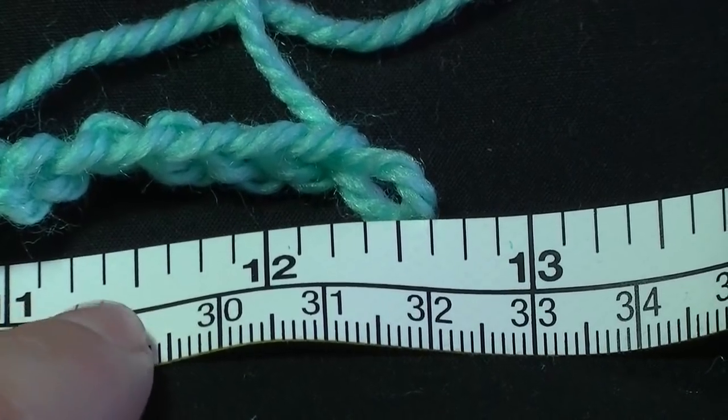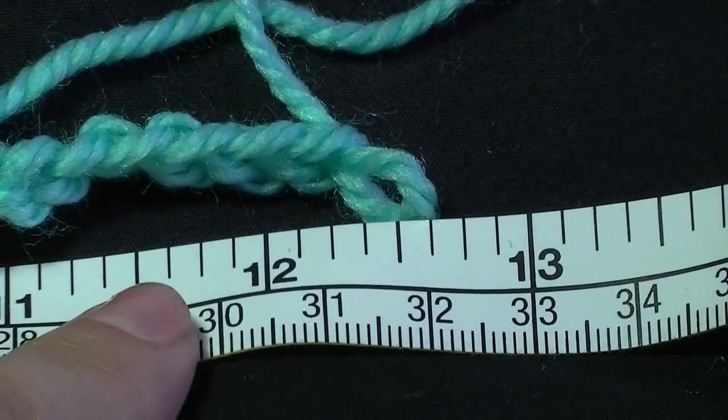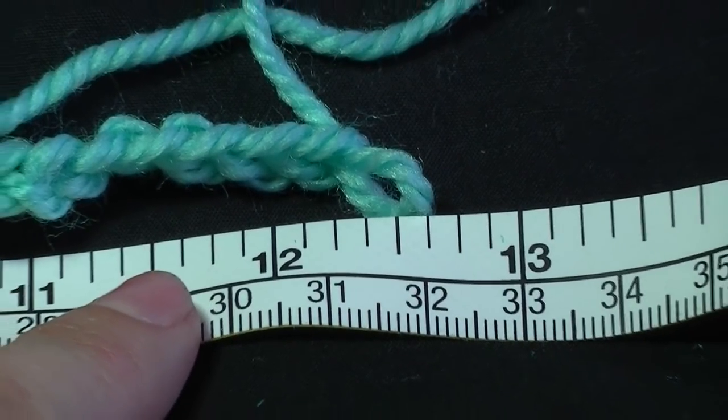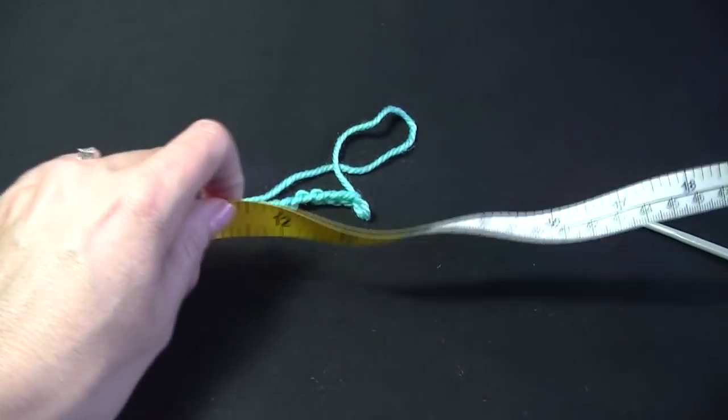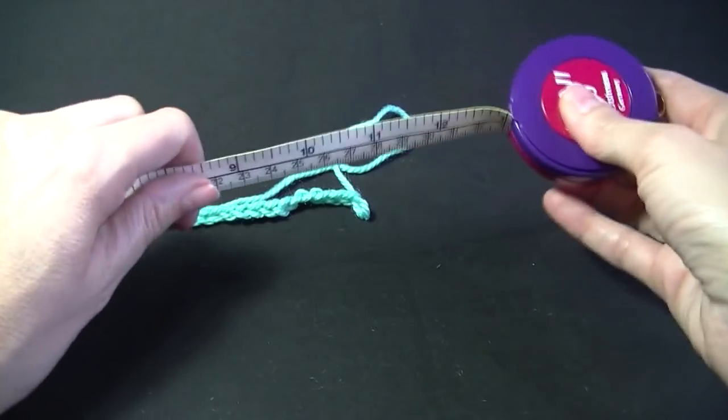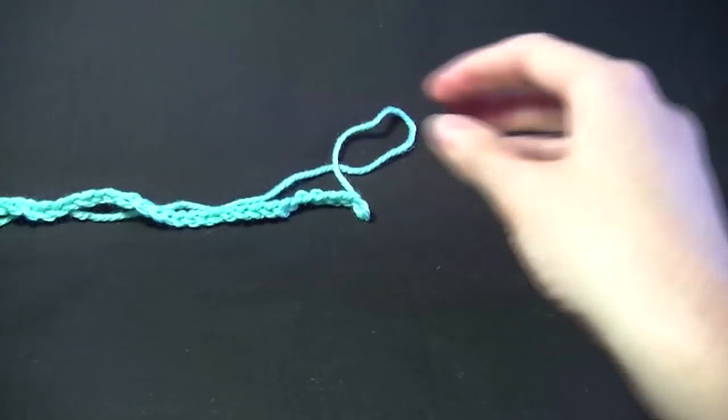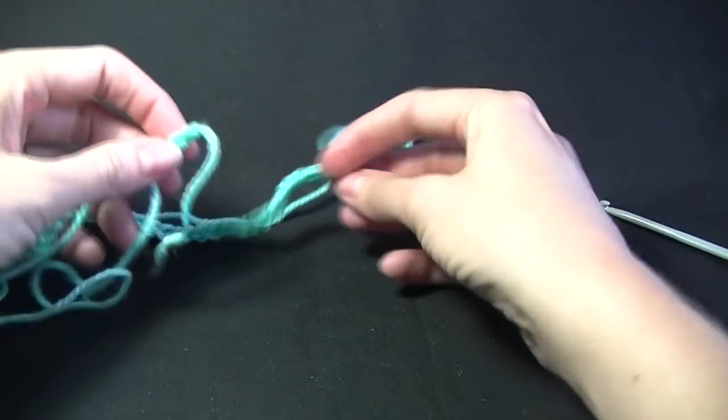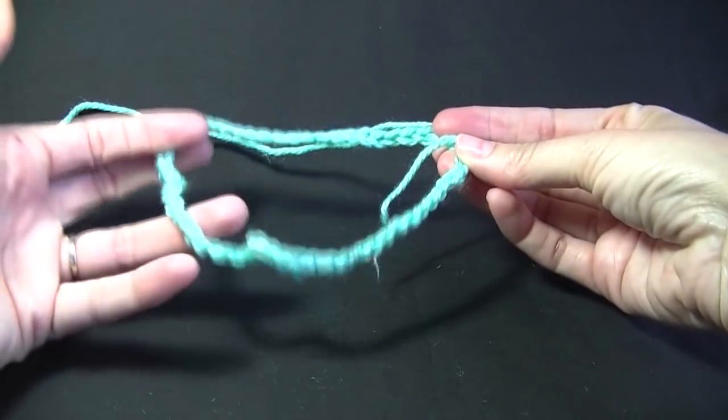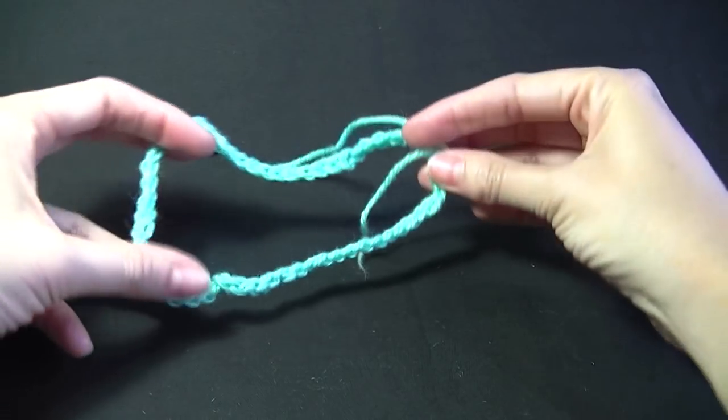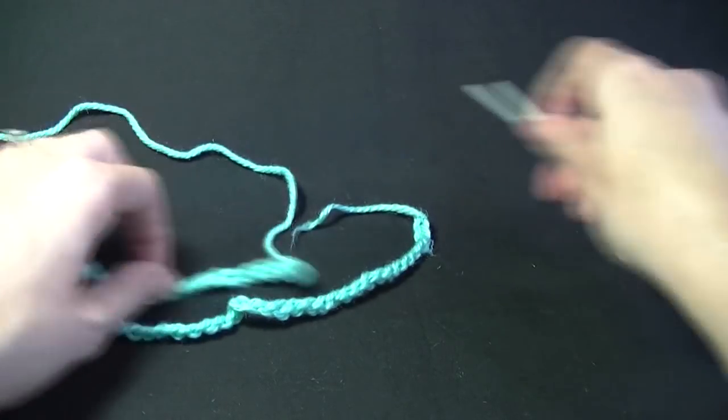First of all we're going to make a chain that is about 30 centimeters or 12 inches long. You can make this a different size because this is going to be the opening of your bag bag. So once we join it together, this is going to be the top where the opening is where you put bags in. So it's completely up to you. You can make it bigger or you can make it smaller.